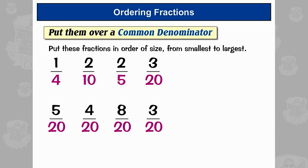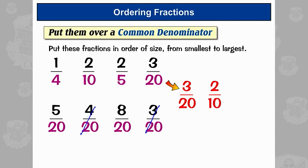Now we can compare the sizes easily. The smallest is three-twentieths. The next smallest is two-tenths. Then five-twentieths, which is a quarter. And then eight-twentieths, which is two-fifths.